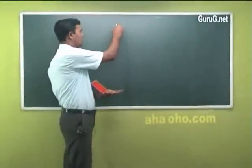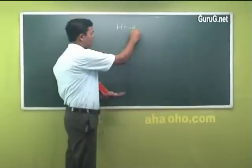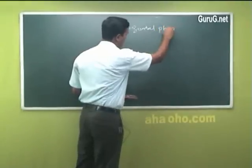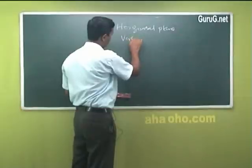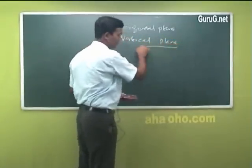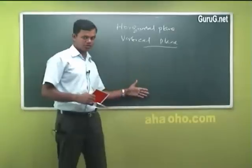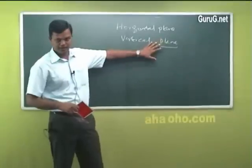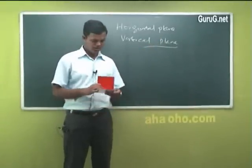I was talking about two planes: a horizontal plane and a vertical plane. Now, this board is a y-axis, which becomes the vertical plane, and the floor is a horizontal plane — the ground is a horizontal plane.